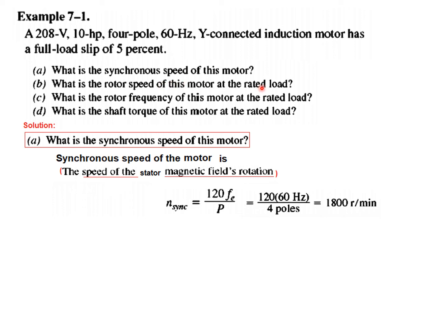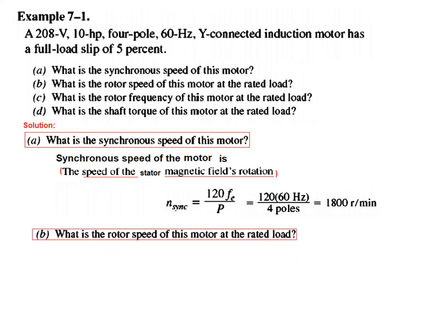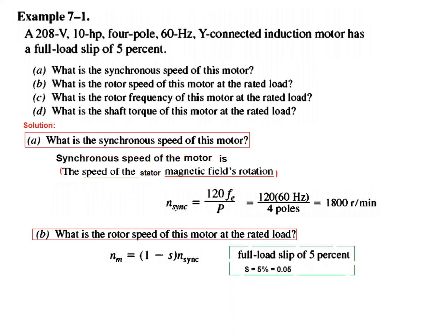Now we find the rotor speed. The rotor speed lags, and using the formula N_m = (1 − S) × N_sync: the full-load slip is 5%, so S = 0.05. Plugging in N_sync = 1800 RPM, the rotor speed is 1710 RPM. You can see that the stator magnetic field speed and the rotor speed are different — the rotor is lagging N_sync.